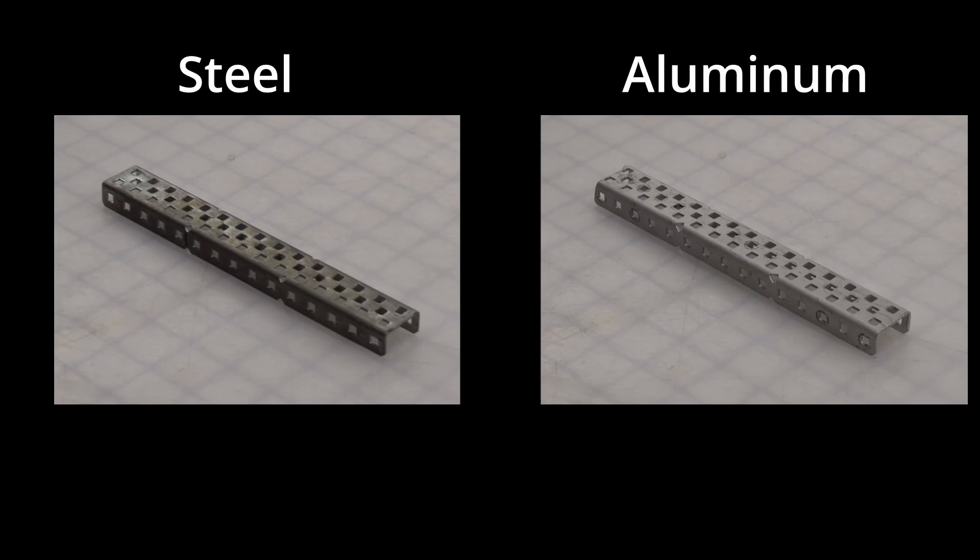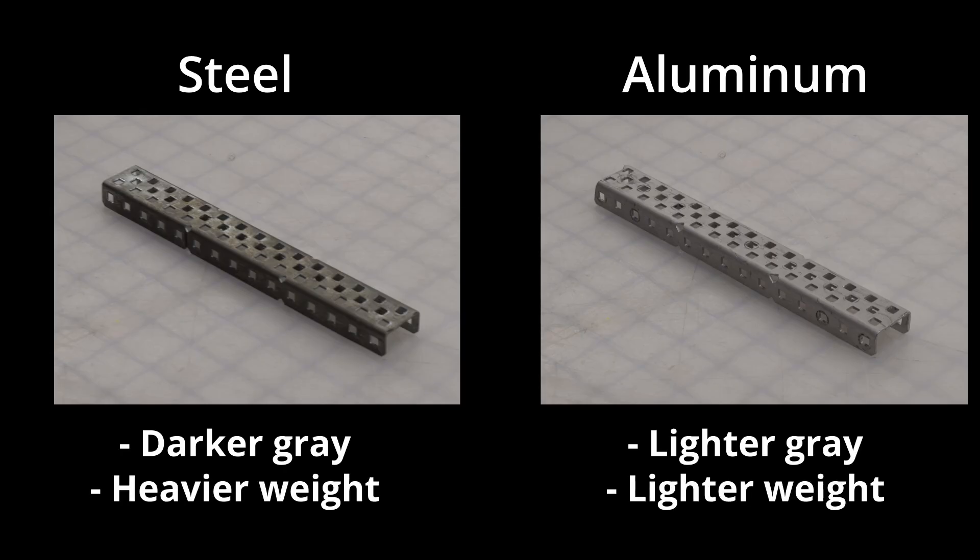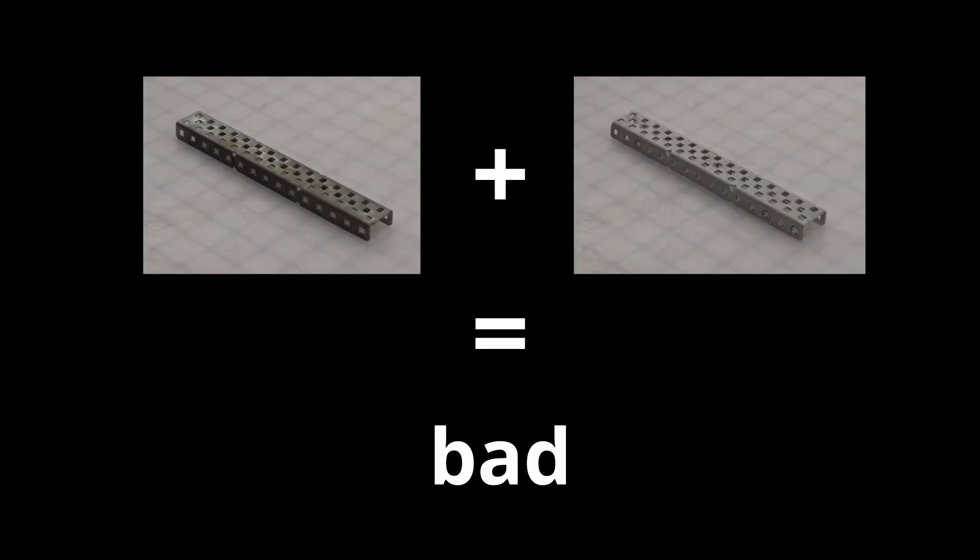What's the difference? Steel is a lot darker and heavier than aluminum. You shouldn't mix steel and aluminum in your chassis.